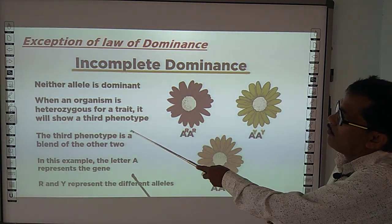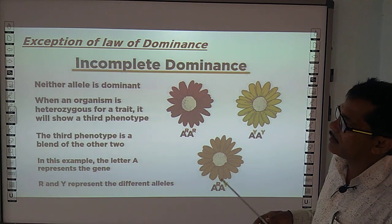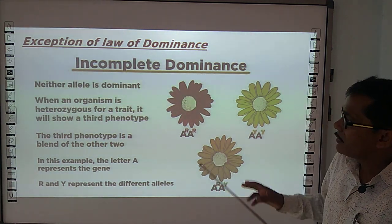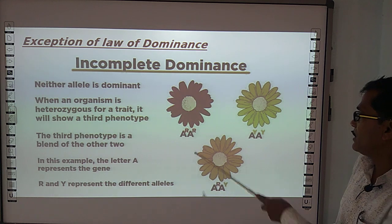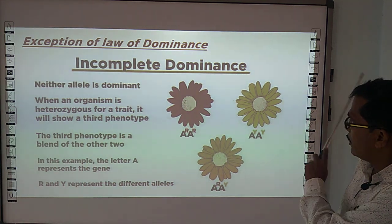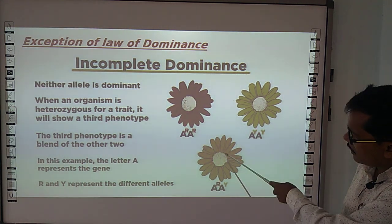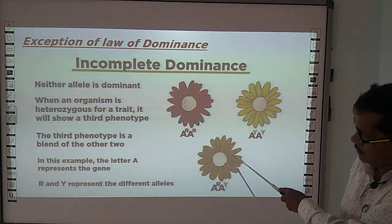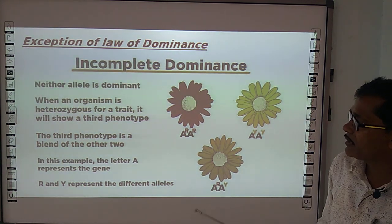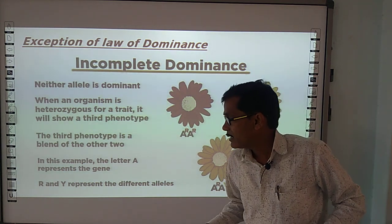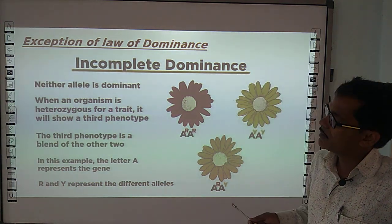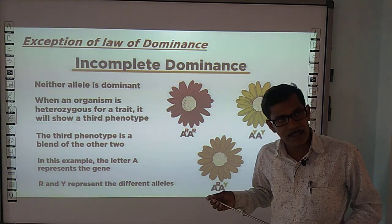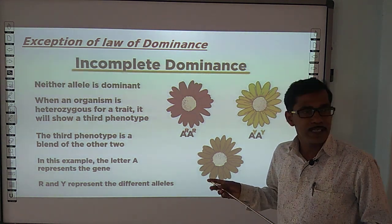In incomplete dominance, neither allele is dominant. When R is in heterozygous condition, it shows a third, different phenotype. For example, when red and white are crossed, neither red nor white is shown — a third phenotype, which is a blend of the two, is expressed in the F1 generation. This is called blending, and it is proven by the law of segregation that no new permanent blending takes place after the F1 generation.